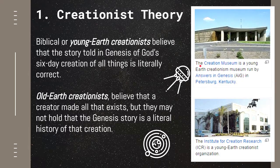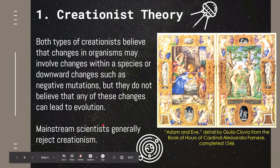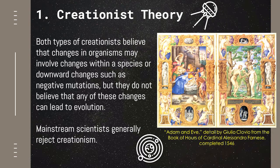Here in this image is the Creation Museum in Pittsburgh, Kentucky. The second type of creationists are old earth creationists, wherein they believe that the Creator made everything that exists, but they may not hold that the story of Genesis is factually correct as a literal history of creation. So they believe that the earth is actually quite old, but they still believe that the story happened as stated in the Bible. Both types of creationists believe that changes in organisms may involve changes within a species or downward changes such as negative mutation, but they do not believe that any of these changes can lead to evolution. They still believe that everything is created by a divine entity, and most of the organisms we see right now appeared the same as they were created.